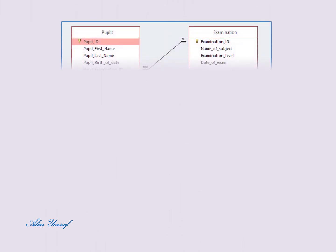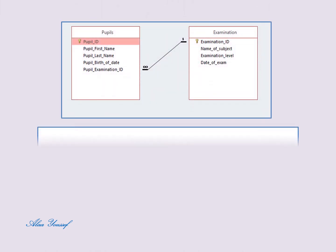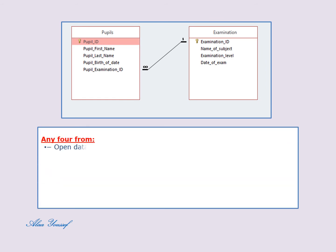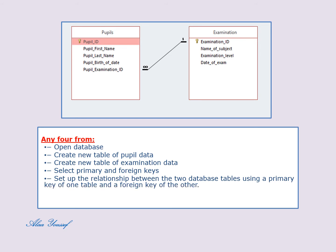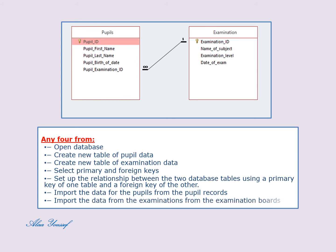The answer: open database, create new table of pupil data, create new table of examination data, select primary and foreign keys, set up the relationship between the two tables using a primary key of one table and a foreign key of the other, import the data for pupils from pupil records, import the data for examinations from the examinations board.